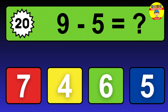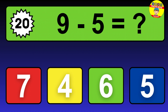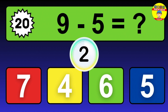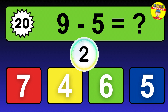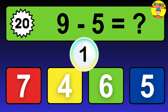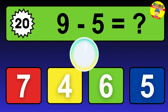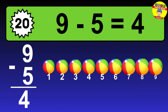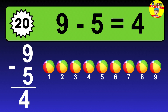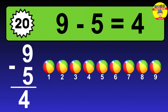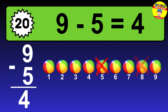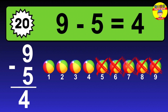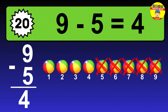Question 20. 9 minus 5 equals what? The answer is 9 minus 5 is 4. Let's count it: 1, 2, 3, 4.